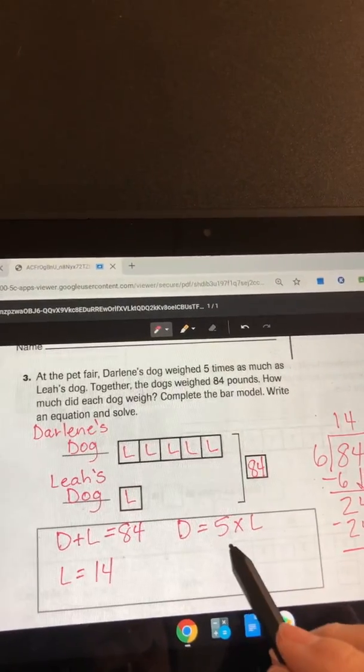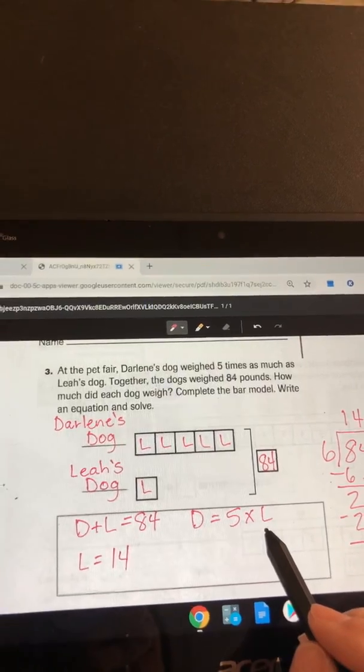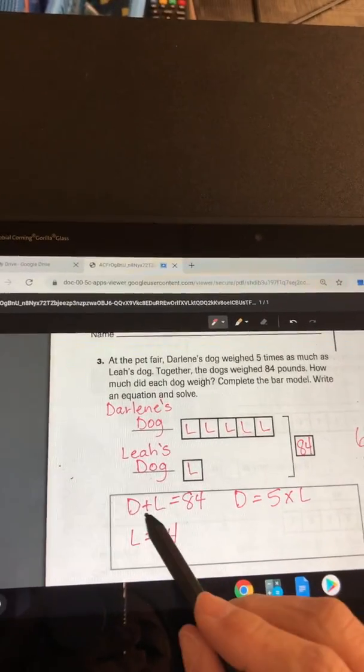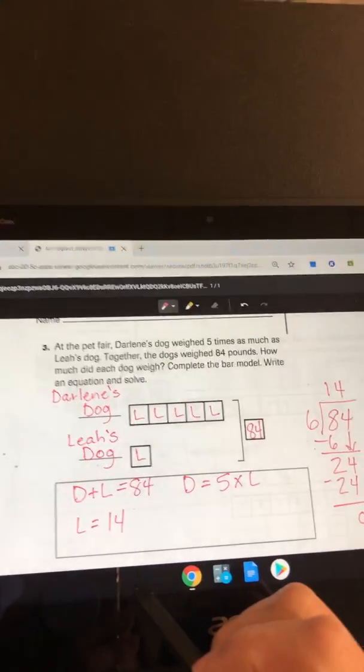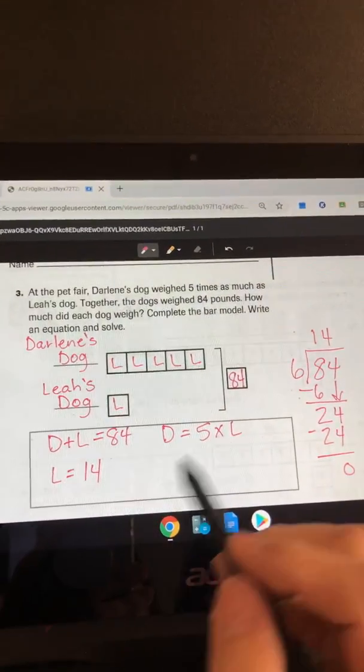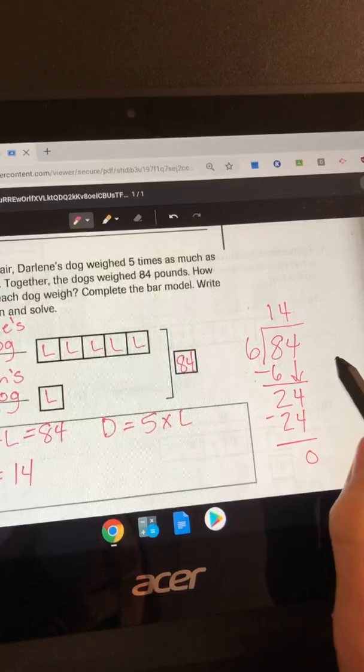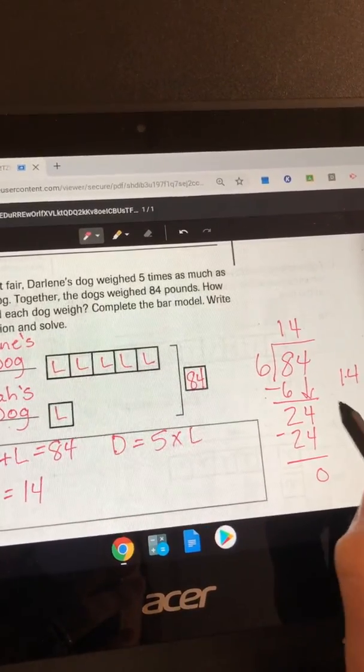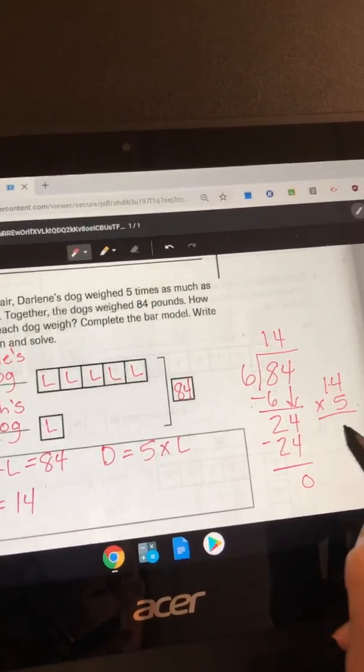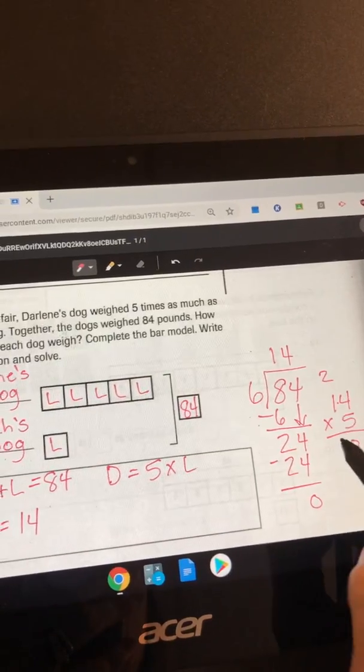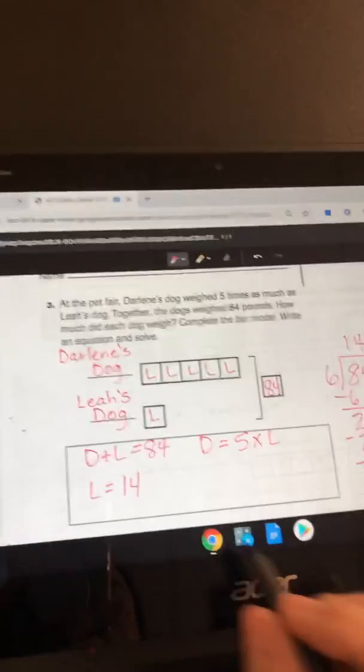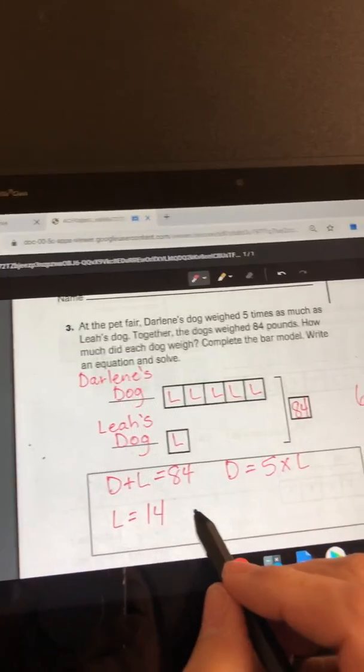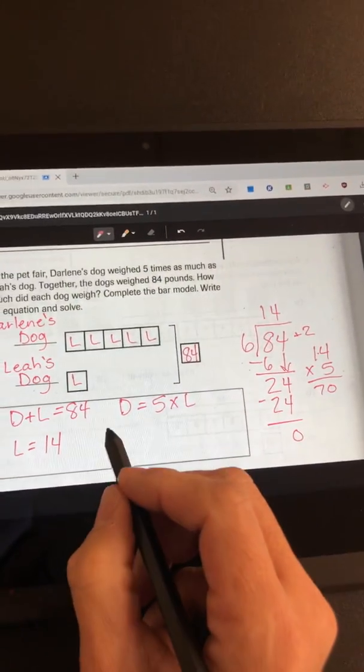So Darlene's dog equals five times 14, and then Darlene's plus Leah's should add up to be 84. If we multiply 14, Leah's dog, times five, that will give us Darlene's dog, which is 70 pounds. So Leah's dog is 14 and Darlene's dog is 70.